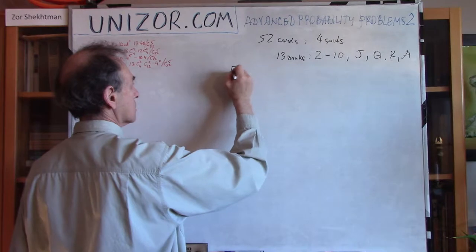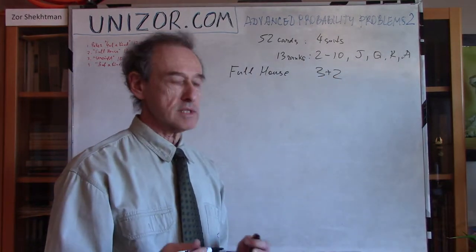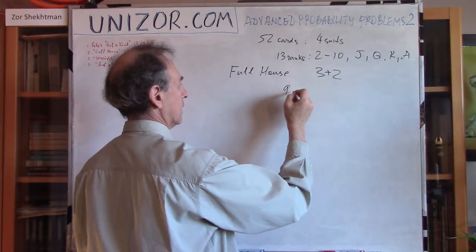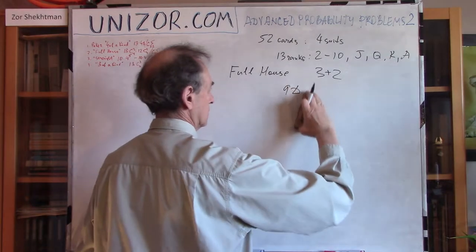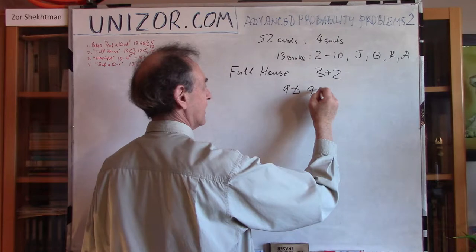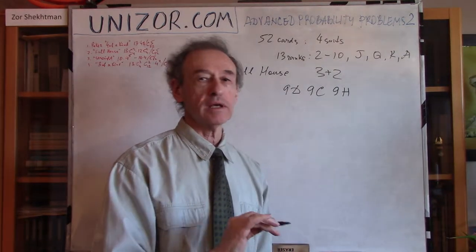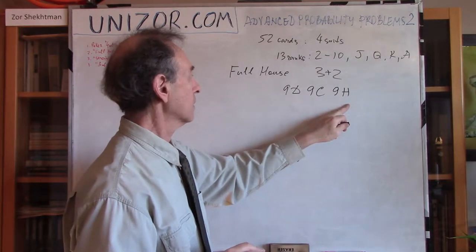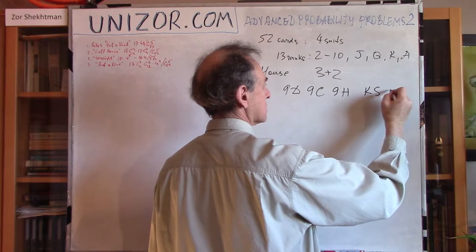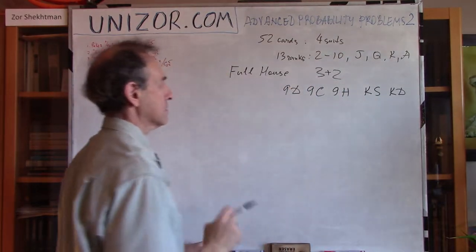Next is full house — sometimes called three plus two. What it means is we have three cards of one particular rank, for example nine of diamonds, nine of clubs, and nine of hearts, and two cards of a completely different rank but the same rank among themselves, let's say king of spades and king of diamonds. Three of one rank and two of another rank — that's what makes a full house.